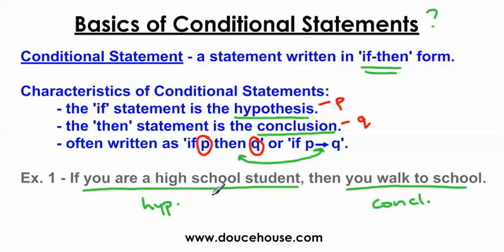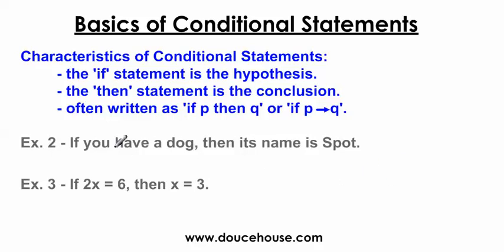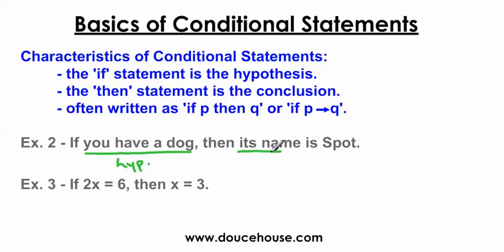Let's do example two. If you have a dog, then its name is Spot. Is this a conditional statement? Does it have 'if' and 'then'? Yes. What is the hypothesis? 'You have a dog' is the hypothesis. And what's the conclusion? The conclusion is 'its name is Spot.'